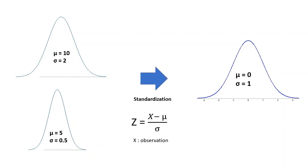The benefit of standardization is that it allows us to use the z-score table to calculate exact areas for any given normal distribution population with any value of mu or sigma. We use this formula to convert a normal distribution to the standard normal distribution, where x is the observation, mu is the population mean, and sigma is the standard deviation.